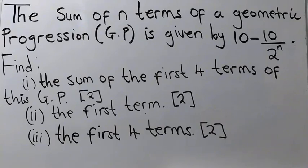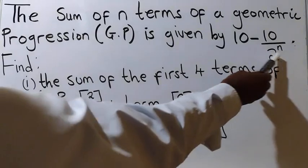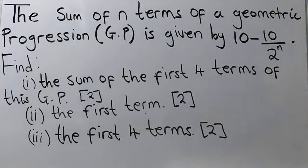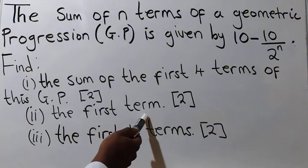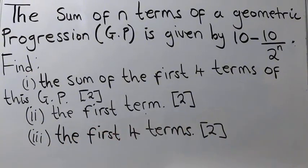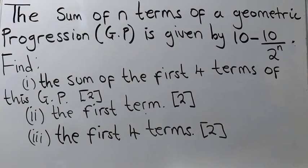The question reads: the sum of n terms of a geometric progression (GP) is given by 10 minus 10 over 2 to the power n. Find: number one, the sum of the first four terms of this GP, given two marks. Number two, find the first term, given two marks. Then find the first four terms of this GP.